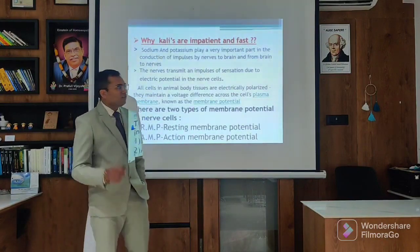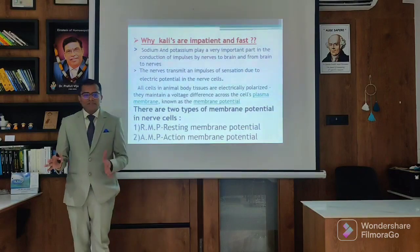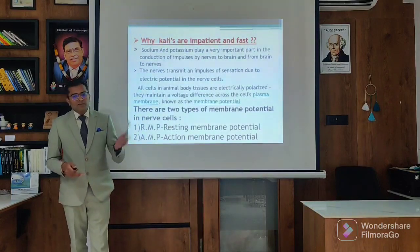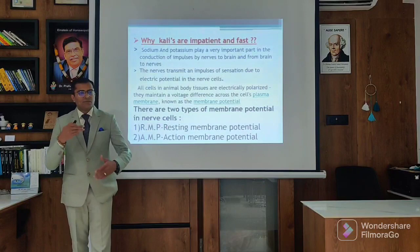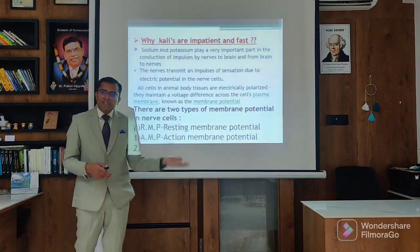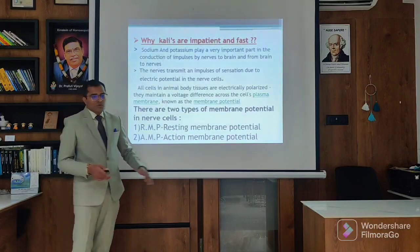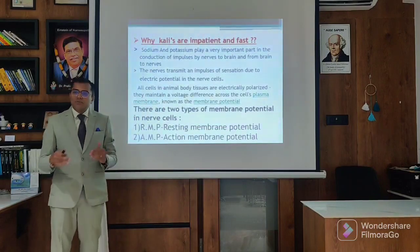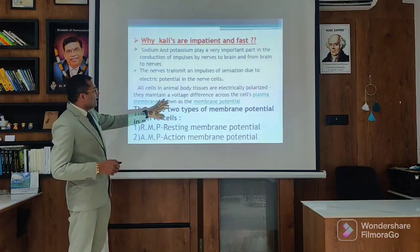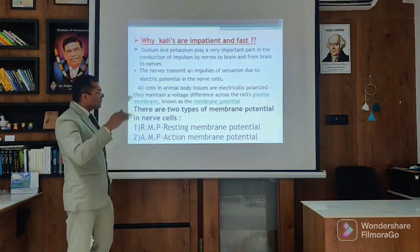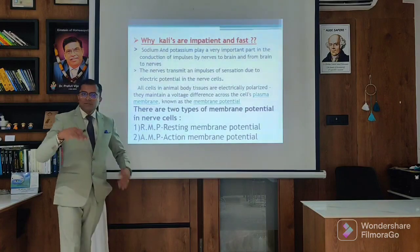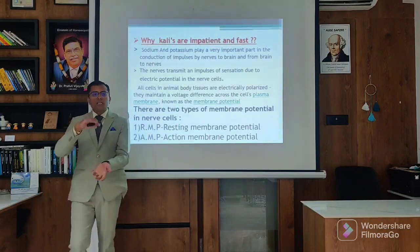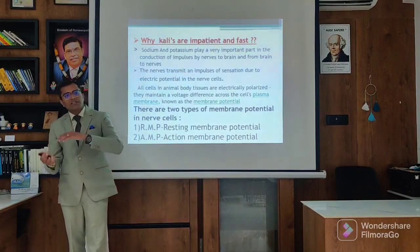Why is Kali most impatient and fast? Sodium and potassium play a very important role in the conduction of the nerve impulse from the nerve to the brain and from the brain to the nerve - it is an excitation process. It acts in sensory as well as motor relationships. Most of the nerve transmits impulses of sensation due to electrical potentials. During electrical potentials, all cells in the animal body are polarized, with a voltage difference between the cell's plasma and membrane. When the membrane potential changes, the movement of electrons from inside to outside is altered.